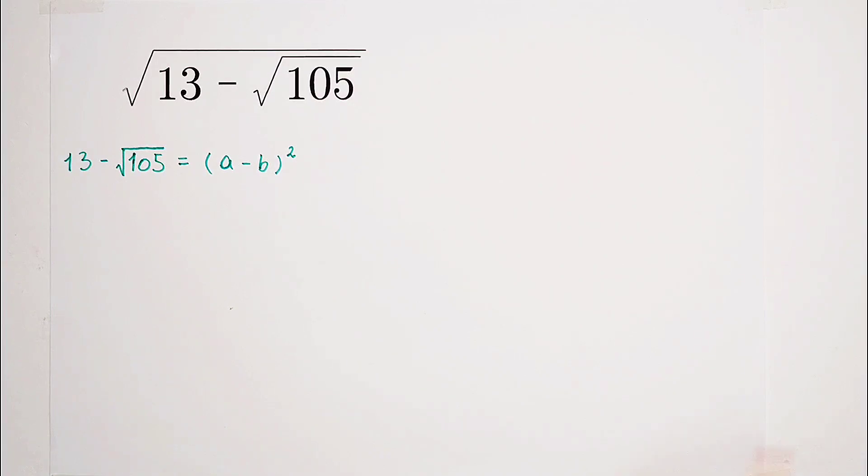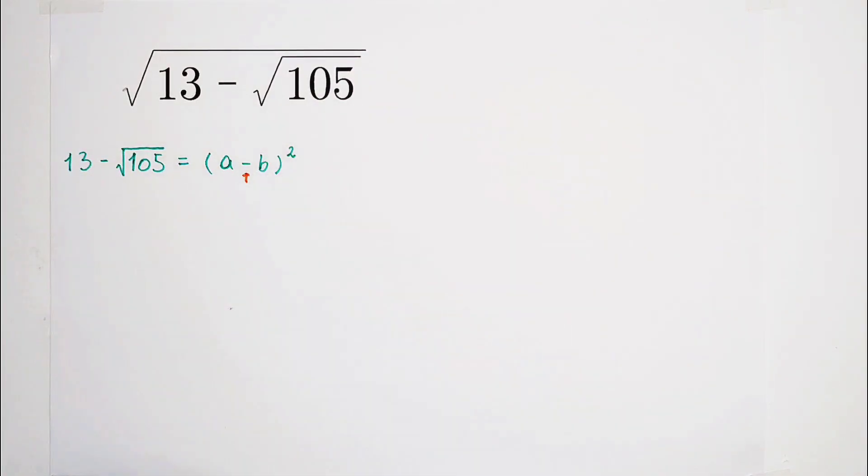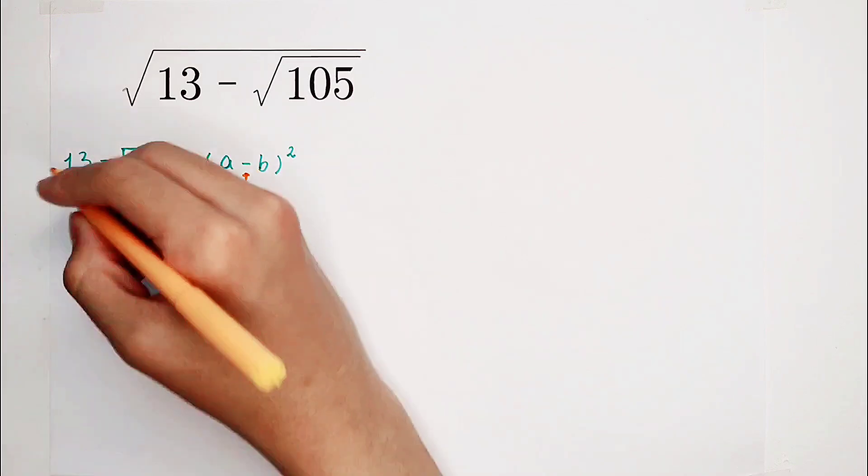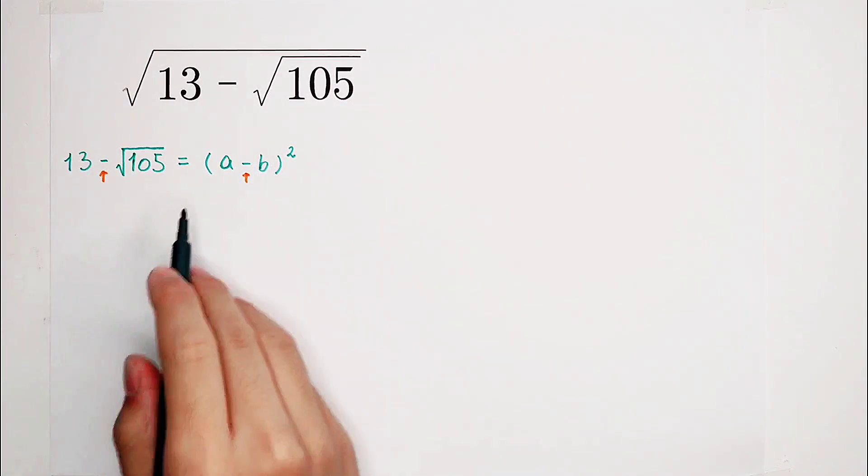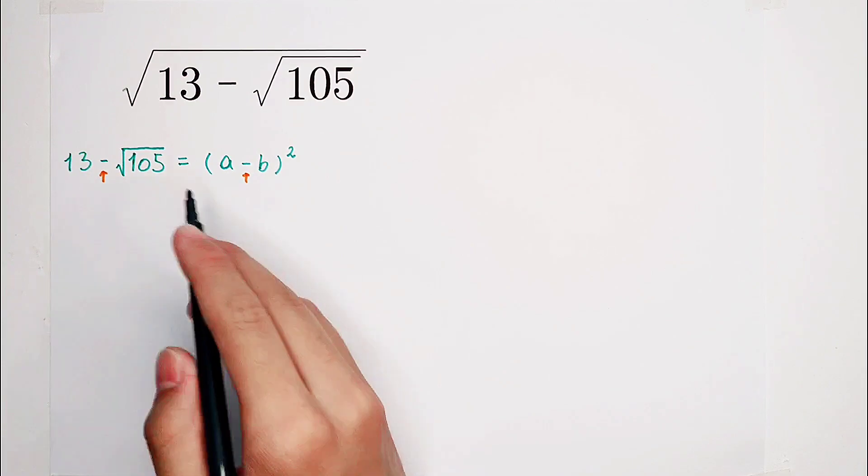Question: Why is here minus? Since here is minus, we know that a and b must have square roots.